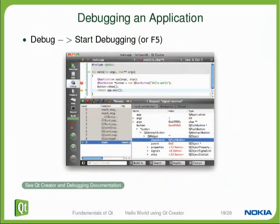You debug your application by hitting the F5 function key. The application will start in debug mode and it allows you to set breakpoints anywhere in the application to stop and inspect the variables. This works the same way on all the different platforms. If you're familiar with cross-platform software development, you will know that debugging is one of the topics that is very diverse across platforms and very hard to do. With Qt Creator, it's the same way everywhere.